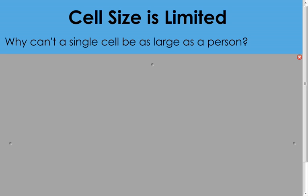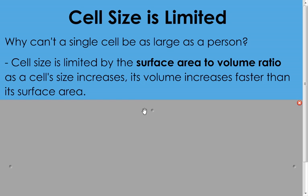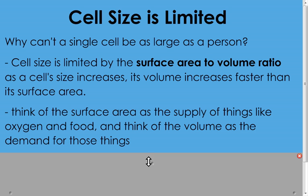Also, sometimes cells get too big for their own good. There is a limit to how big cells can get — once a cell grows too large it actually starts to die. Cell size is mostly limited by the surface area to volume ratio. This ratio decreases as the cell gets bigger, due to the fact that a cell's volume increases faster than its surface area. If we think of surface area as the supply of things like oxygen, water, and food into the cell, and volume as the demand for those things, they need to be balanced.